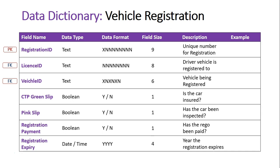The descriptions outline everything covered so far. The Registration ID is the unique primary key. The License ID foreign key refers to which driver the vehicle is registered to, and the Vehicle ID foreign key refers to which vehicle is being registered, mapping to all attributes in those other entities. The CTP Green Slip description reads 'is the car currently insured?', the Pink Slip 'has the car been inspected and deemed roadworthy?', and Registration Payment 'has the rego been paid?'